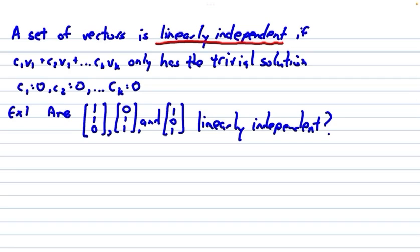So let's look at this one. Example 1 says, are the vectors [1, 1, 0], [0, 1, 1], and [1, 0, 0] linearly independent?